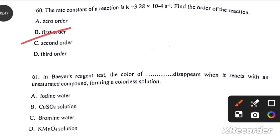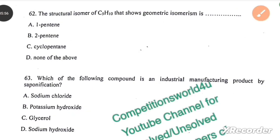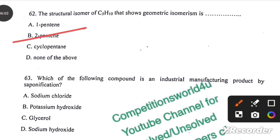In Bayer's reagent test, the color of KMnO4 solution disappears when it reacts with an unsaturated compound forming a colorless solution. The structural isomer of C5H10 that shows geometric isomerism is 2-pentene. Which of the following compound is an industrial manufacturing product by saponification? Glycerol.